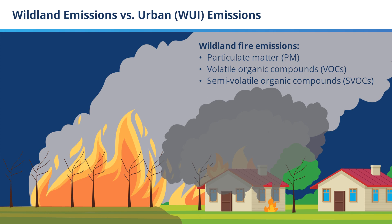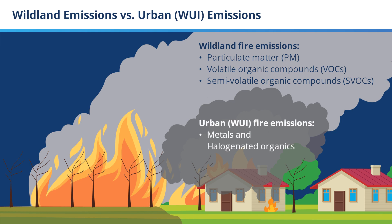But when a wildfire spreads to include urban fuels, we expect to find an entirely different set of pollutants being released or emitted, because these fuels are chemically very different from the trees and shrubs burning in a normal wildfire. The built environment contains different types of metals, PVC — which has chlorine in it — compounds with high nitrogen content like nylon, or glues in manufactured woods that can generate cyanates emitted from those fires. We say 'expect to find' because there is limited research on WUI fire emissions.